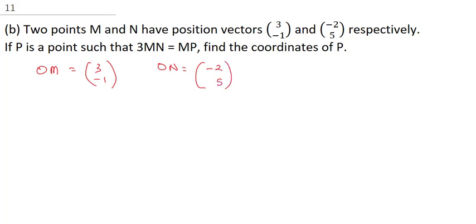So, having these two vectors, now, the question says 3 M N is equal to N P. Now, in vector analysis, when you have M N, you're going to have, with the reference point, it's going to be O N minus O M.